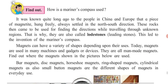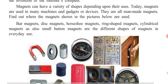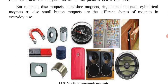Magnets can have a variety of shapes depending upon their uses. Today, magnets are used in different machines, gadgets, and devices. The types of magnet include: bar magnet, disc magnet, horseshoe magnet, ring-shaped magnet, cylindrical magnet, and more. These are all man-made magnets used in our day-to-day life.